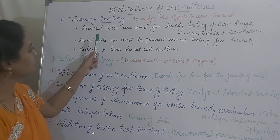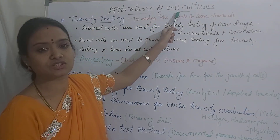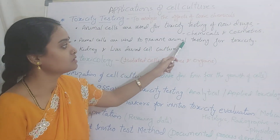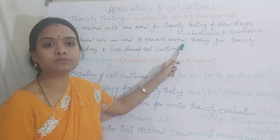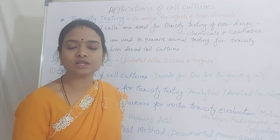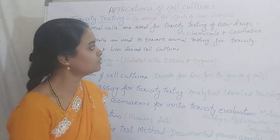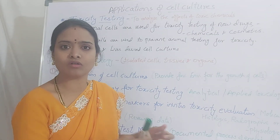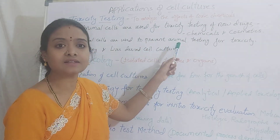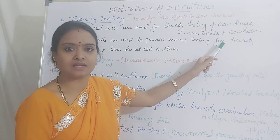So why are we using these cell cultures? In order to prevent harm to the animals — we don't want to cause any harm or kill any animals. So instead of testing toxic chemicals or new products on animals, we are indirectly testing them by testing on cell lines.